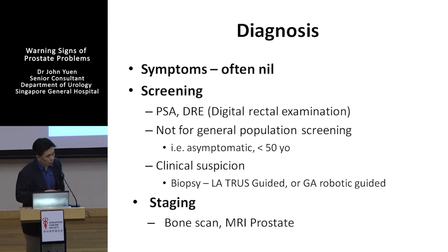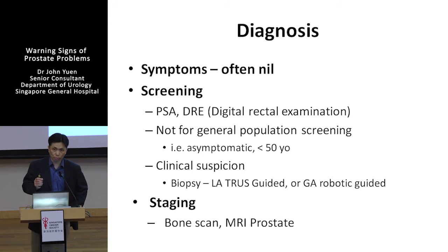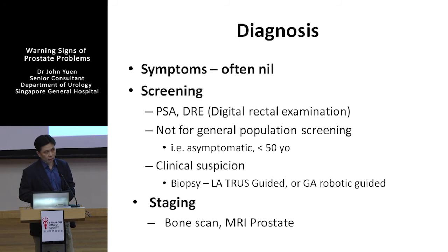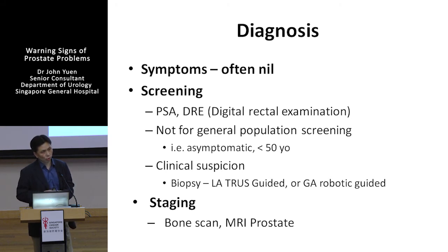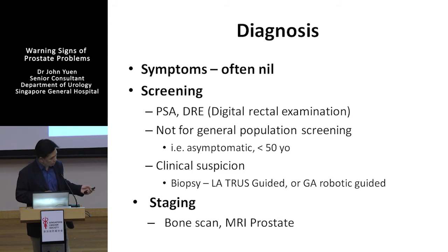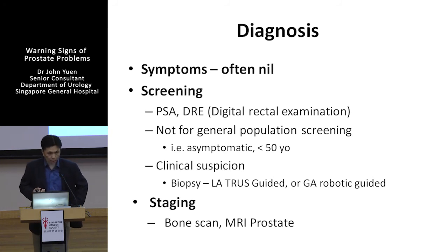When you have any suspicion for prostate cancer, the next step is a biopsy — taking some tissue from the prostate and sending it for a test. This is the only way we can diagnose prostate cancer, not by a blood test, not by any scanning. There is no way at the moment that we can see small prostate cancer through ultrasound or CT scan. It's still by biopsy.